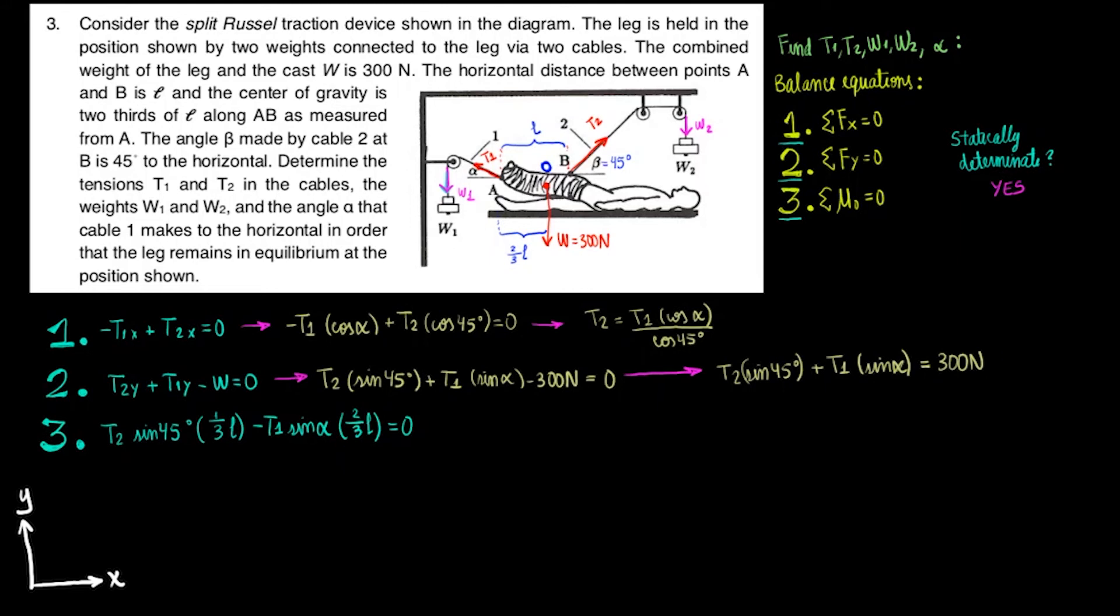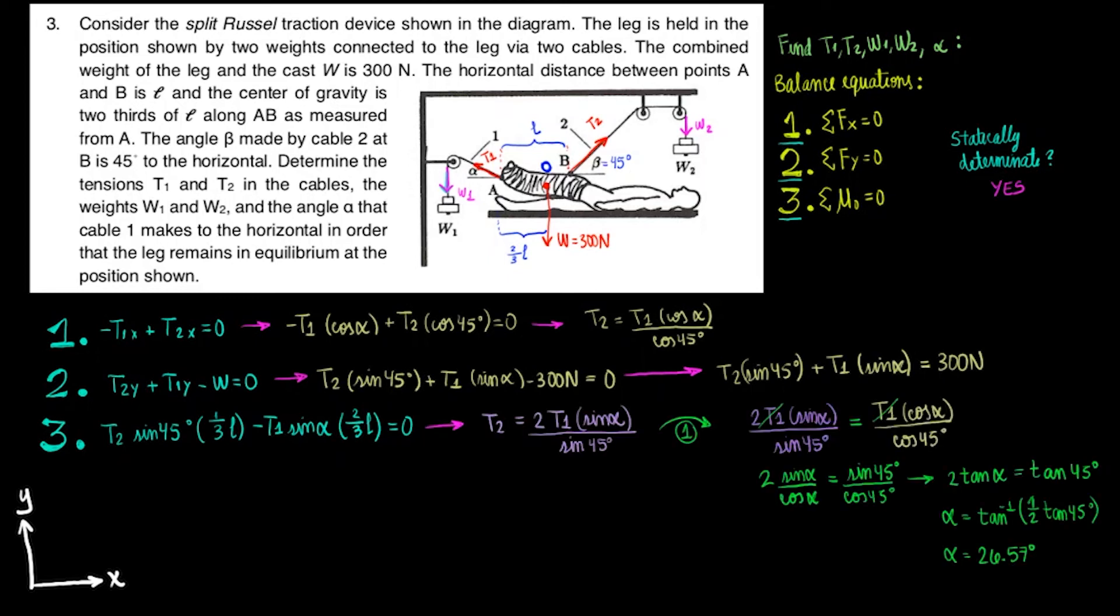Let's now move some things around and simplify these equations. We can find alpha by solving for T2 in equation 3, then plugging equations 3 into 1. That's possible because T1 simplifies out of the expression. We end up with alpha equal to 26.57 degrees.